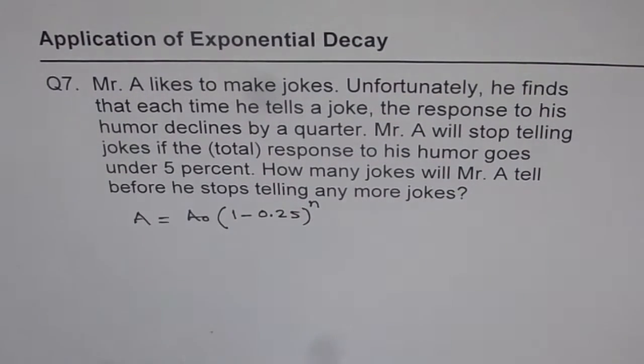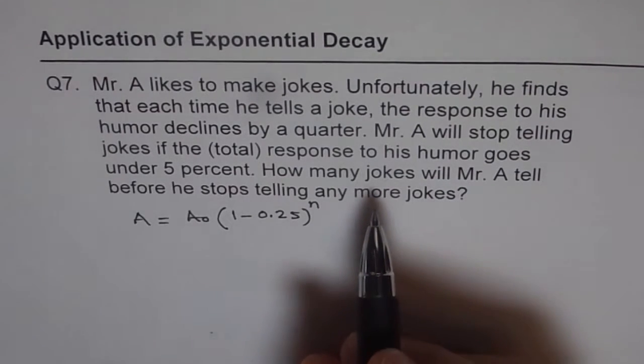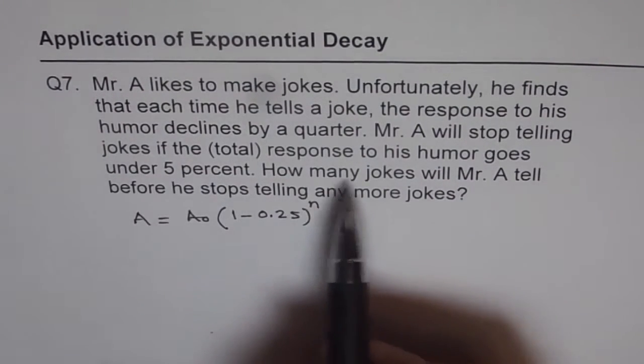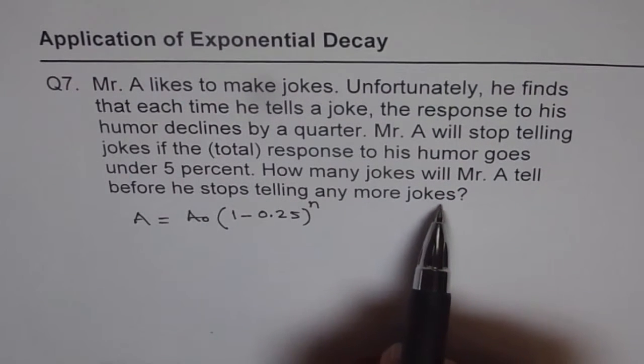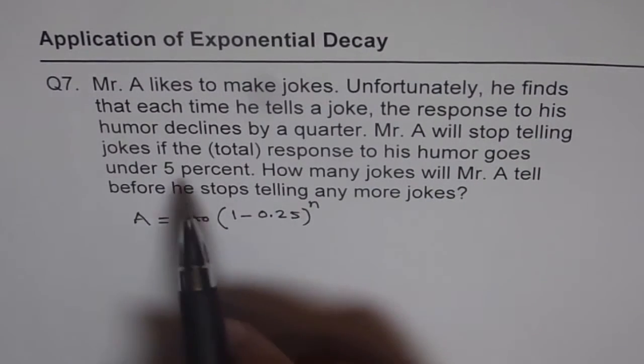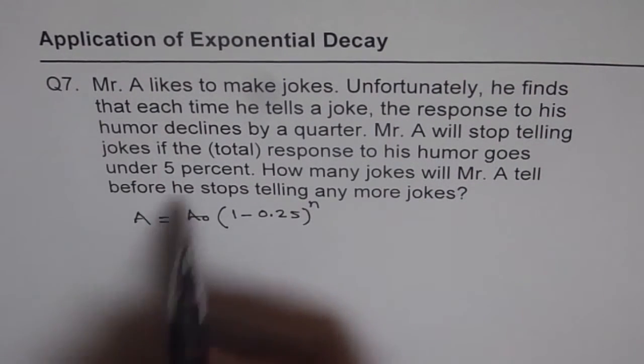where n is the number of jokes. So that could be the equation for this particular function. Now it says, how many jokes will Mr. A tell before he stops telling any more jokes and he stops when the humor goes under 5%. Under 5% means if you start from 100,